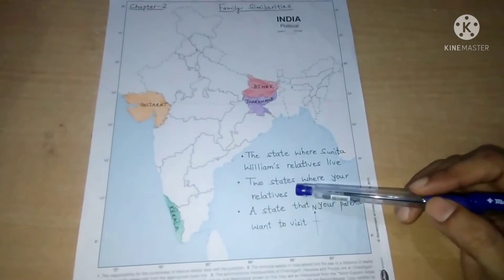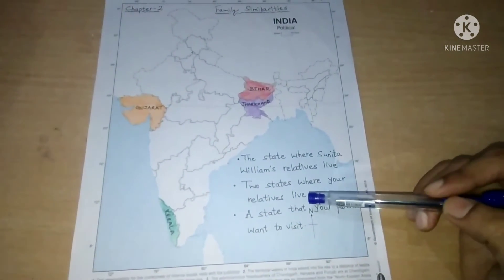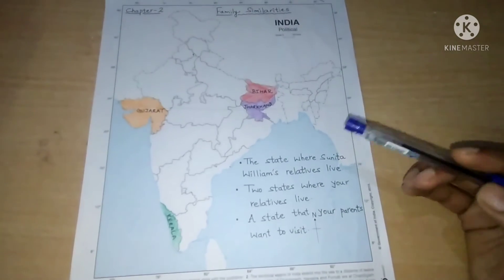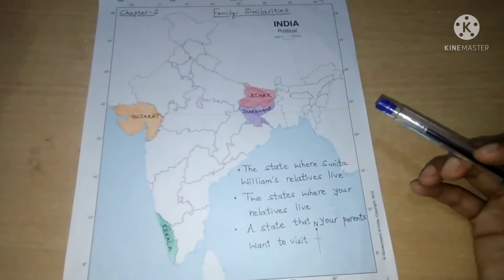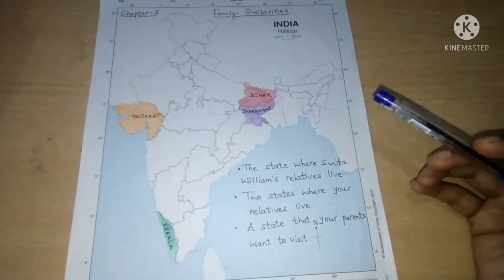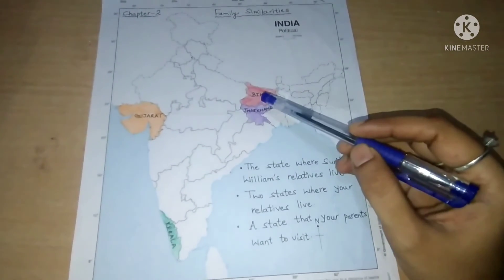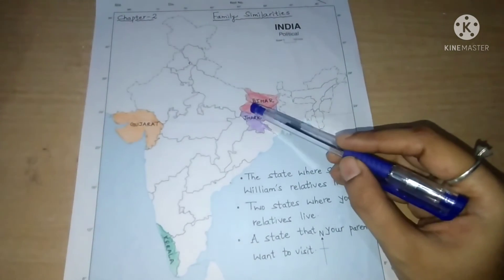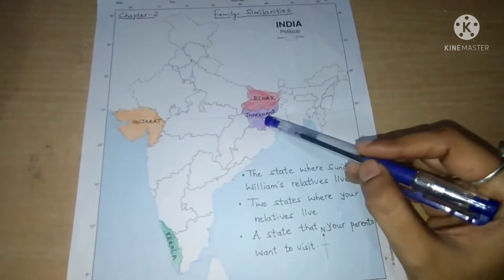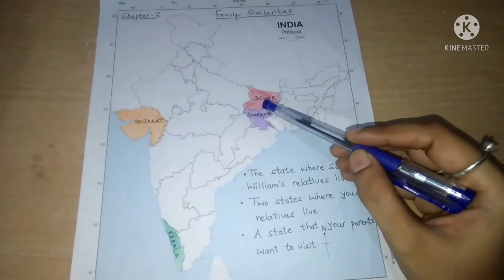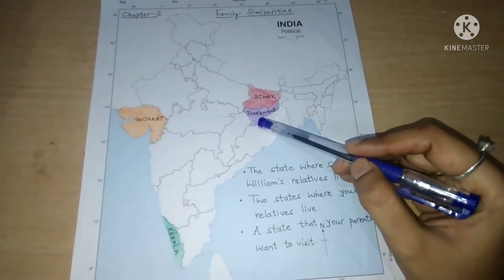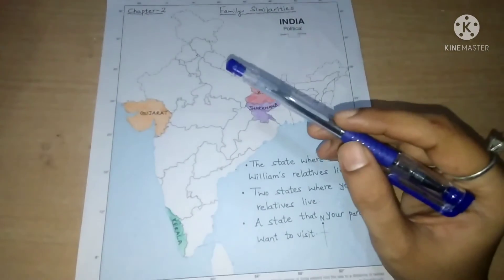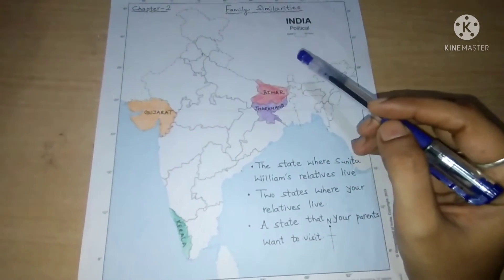Number 2 is two states where your relatives live — this is your homework. You have to point yourself on the map to where your relatives live. As for me, my relatives live in Bihar and Jharkhand, so I have filled color and written the names of those states. You will write the name of your relatives' state and color it.